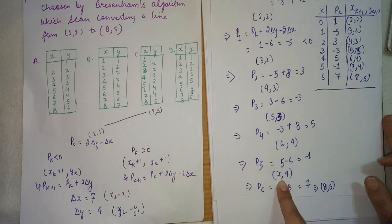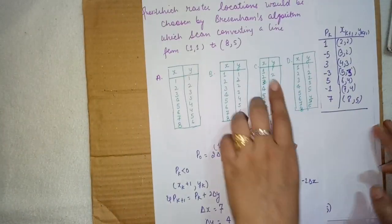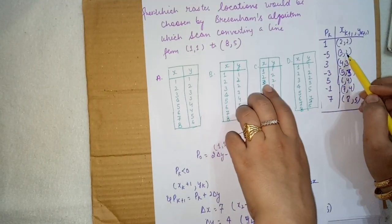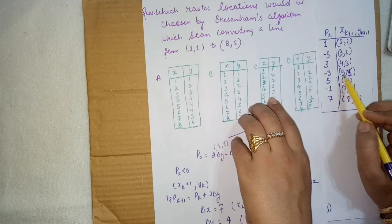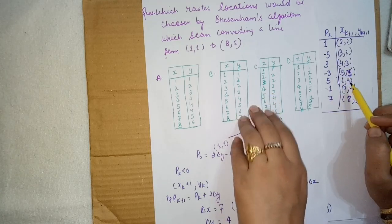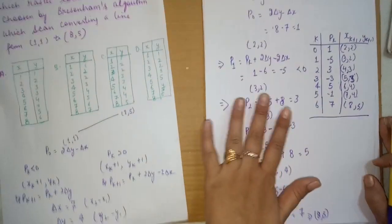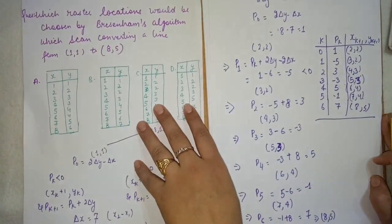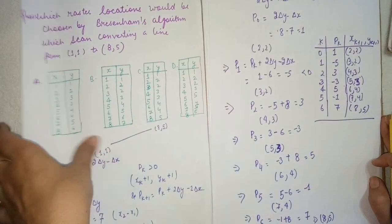Option C is the right answer. The raster locations are: (1,1), (2,2), (3,2), (4,3), (5,3), (6,4), (7,4), and (8,5). This is the correct way to solve this question.